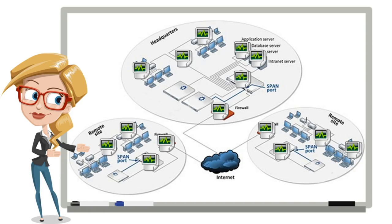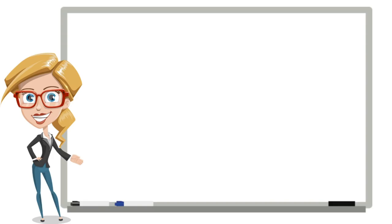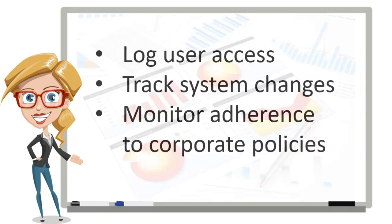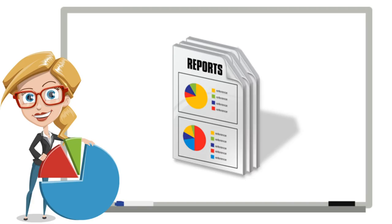We usually refer to this as a log aggregation solution, and unfortunately this is where many SIEM offerings stop. The second main function of a SIEM is to provide logging and reporting for compliance purposes. For almost every compliance regulation, there are requirements to log user access, track system changes, and monitor adherence to corporate policies. A good SIEM solution makes these tasks much easier by collecting this data from all your systems. Then, when it's time for an audit or exam, you can simply generate the appropriate compliance reports and send them to the appropriate people. Your SIEM must have the needed compliance functionality and reports built in to be effective, but many SIEM offerings don't.